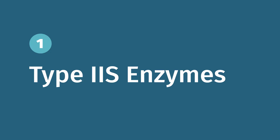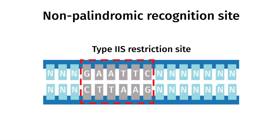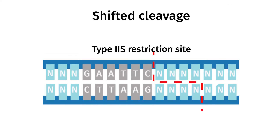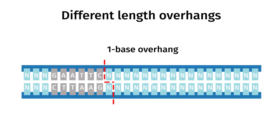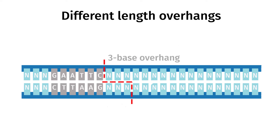Golden Gate takes advantage of several type 2S features that make them impractical for standard restriction enzyme cloning. First, the recognition site is non-palindromic. In general, sites range from four to seven nucleotides. Second, DNA is cleaved outside the recognition site. Different type 2S enzymes will cleave DNA to produce different length overhangs.